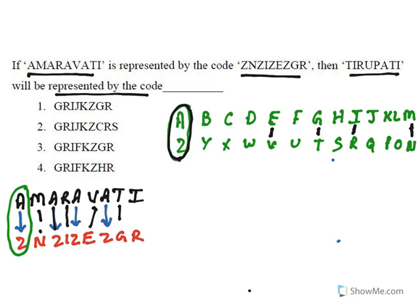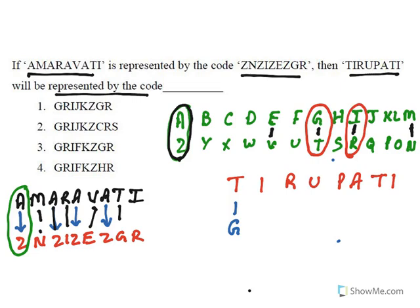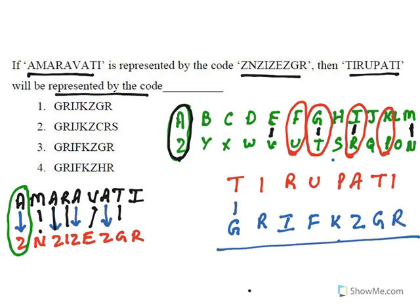Now let us apply this to Tirupati: T, I, R, U, P, A, T, I. T pairs with G; I pairs with R; R pairs with I; U pairs with F; P pairs with K; A pairs with Z; T pairs with G again; I pairs with R. So the code for Tirupati is G, R, I, F, K, Z, G, R.